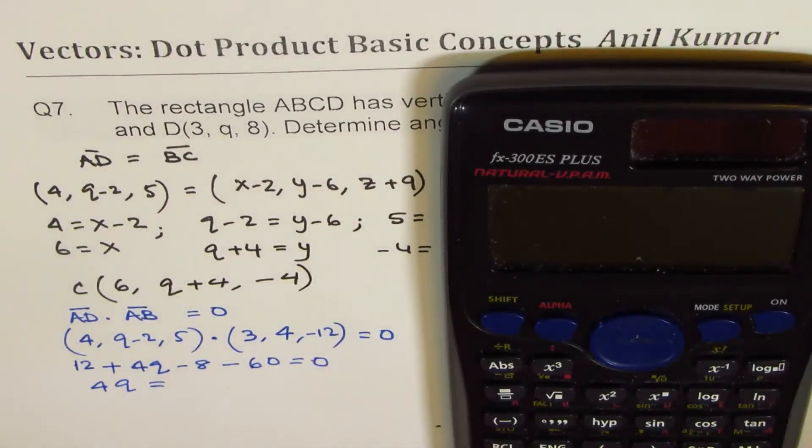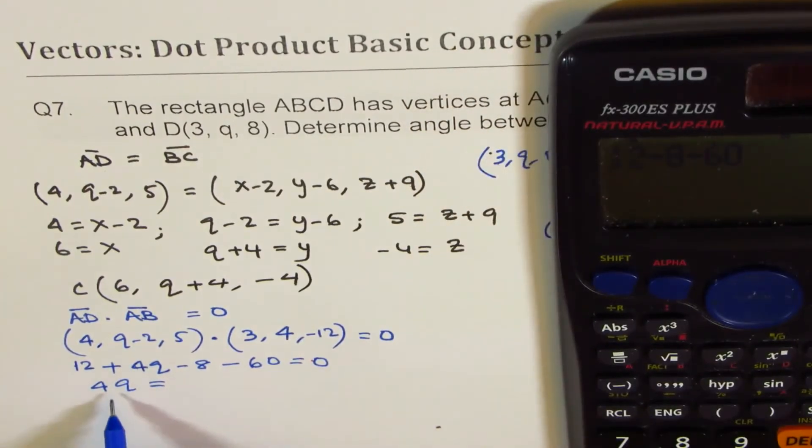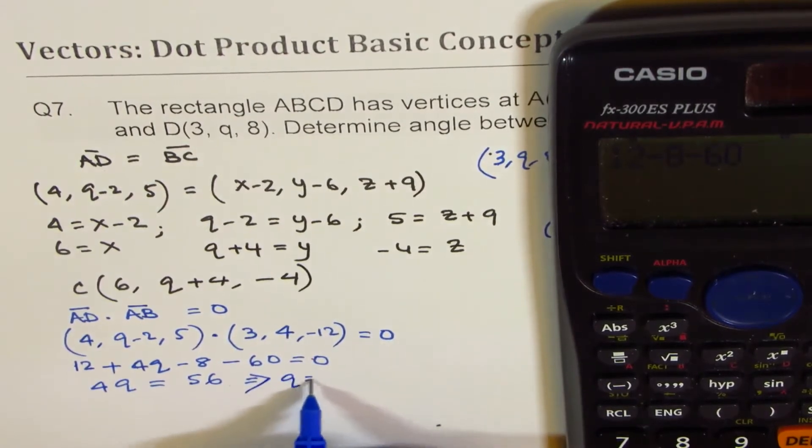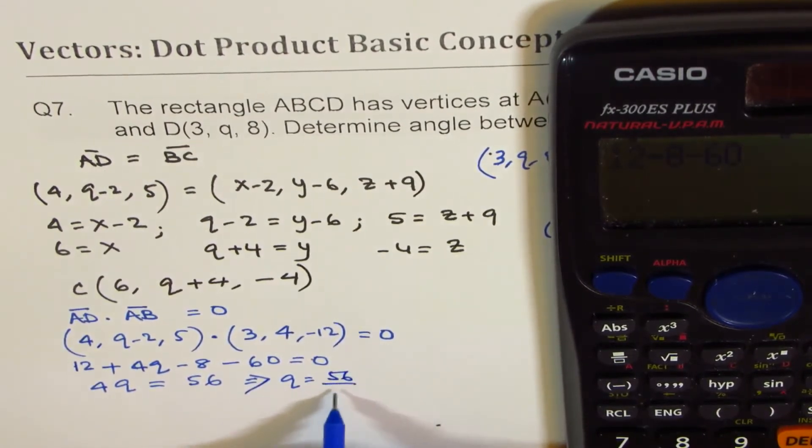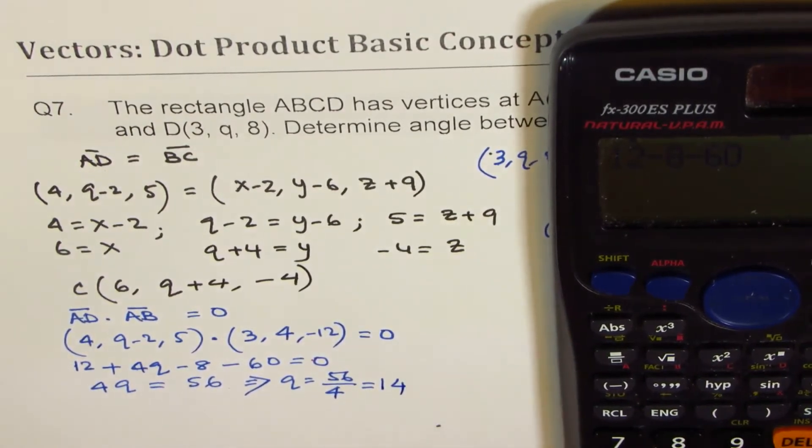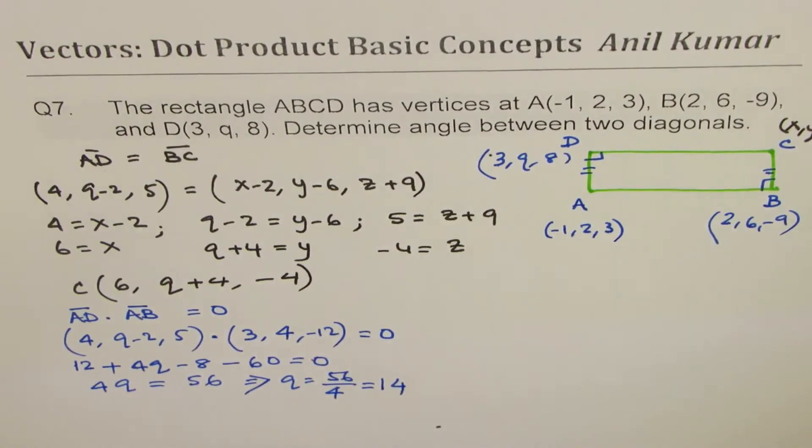So 4Q equals, let's do this: 12-8-60 = -56. Taking it to the right side, we get plus 56. So Q = 56/4 = 14. So we get a value of Q.